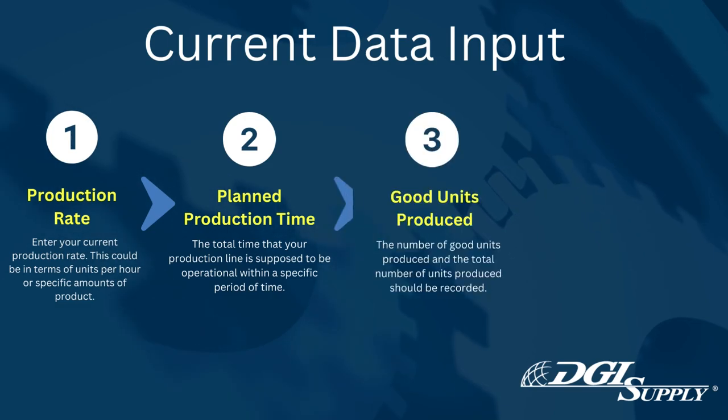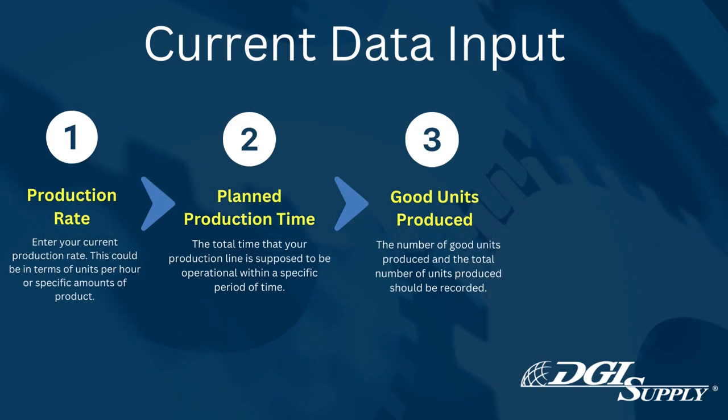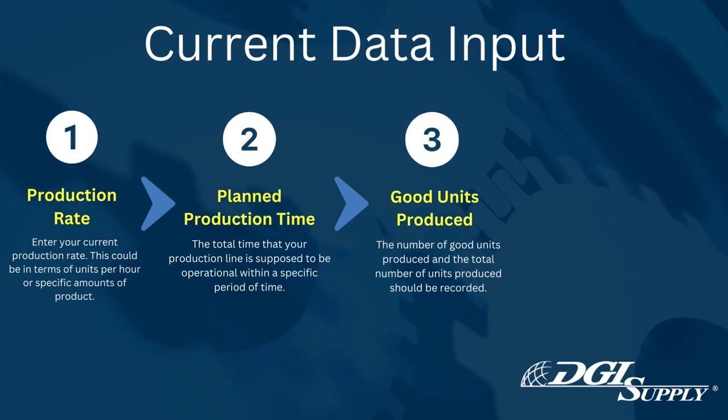3. Good Units Produced. The number of good units produced and the total number of units produced should be recorded.